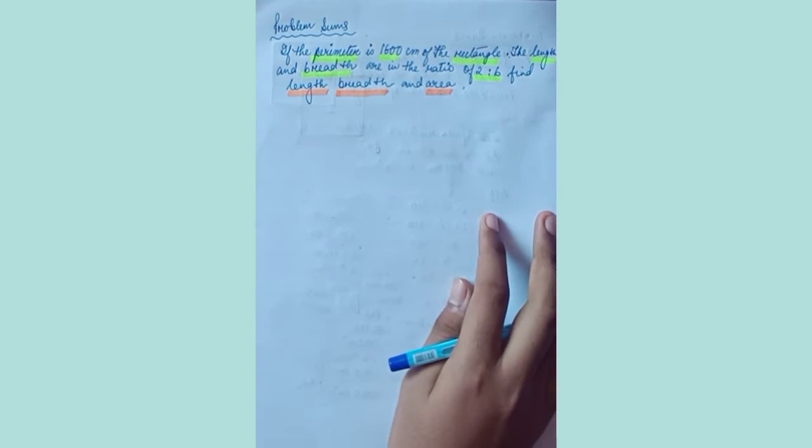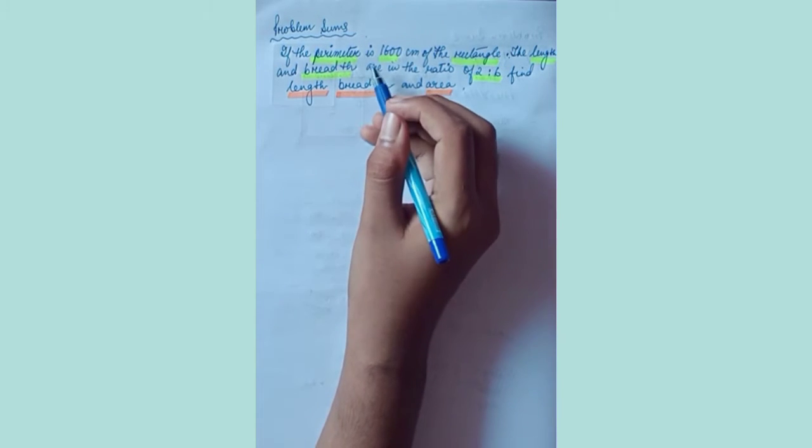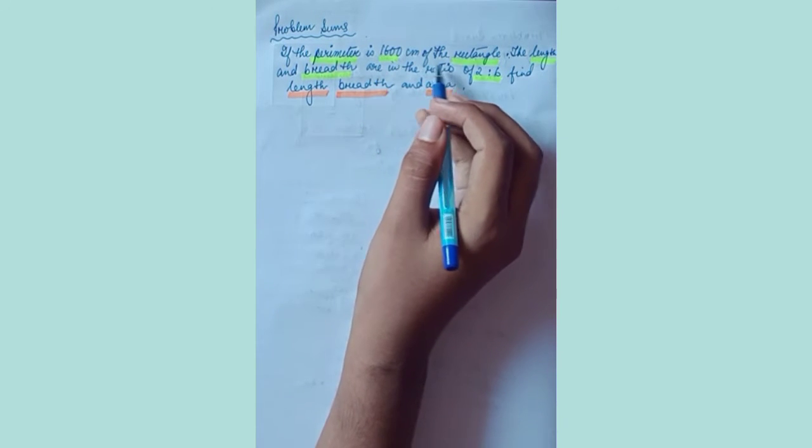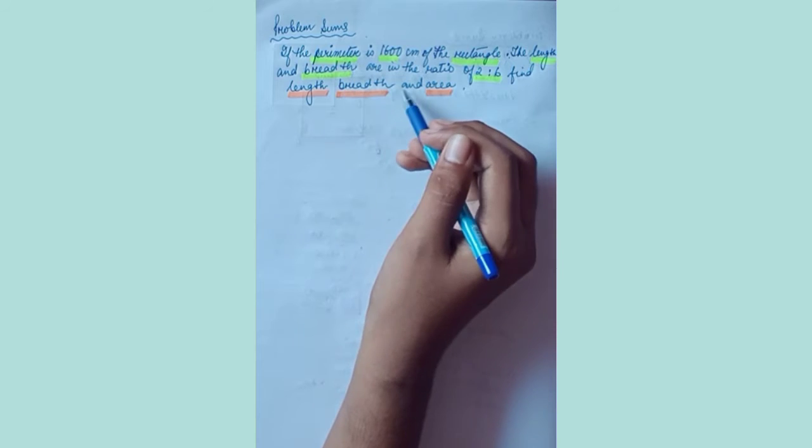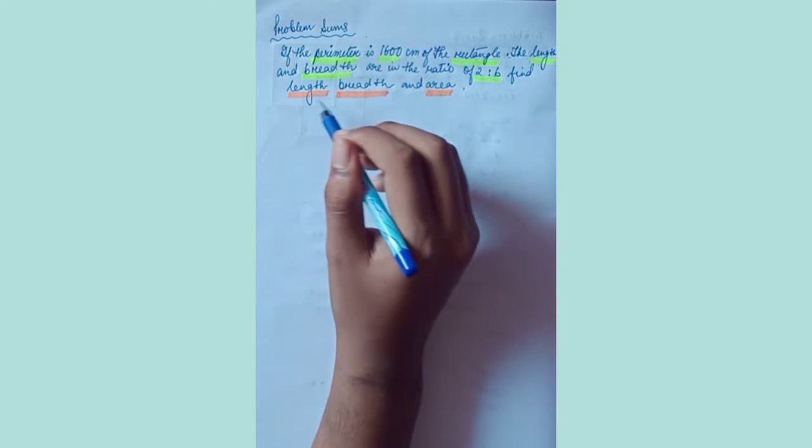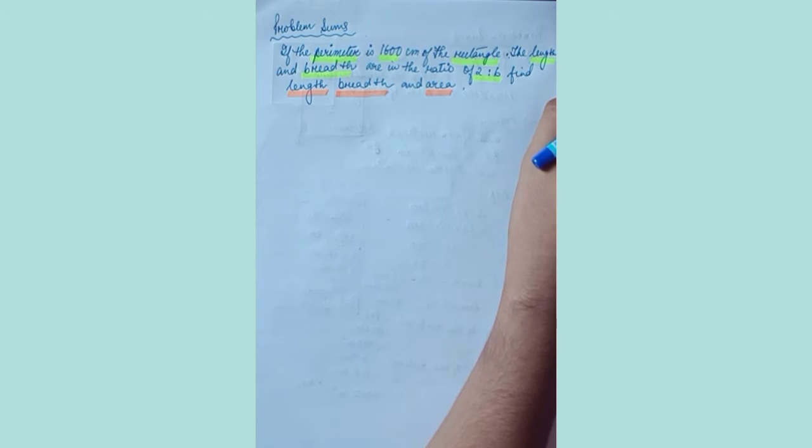Here it is given: if the perimeter is 1600 centimeters of the rectangle, the length and breadth are in the ratio of 2 is to 6. Find length, breadth, and area.